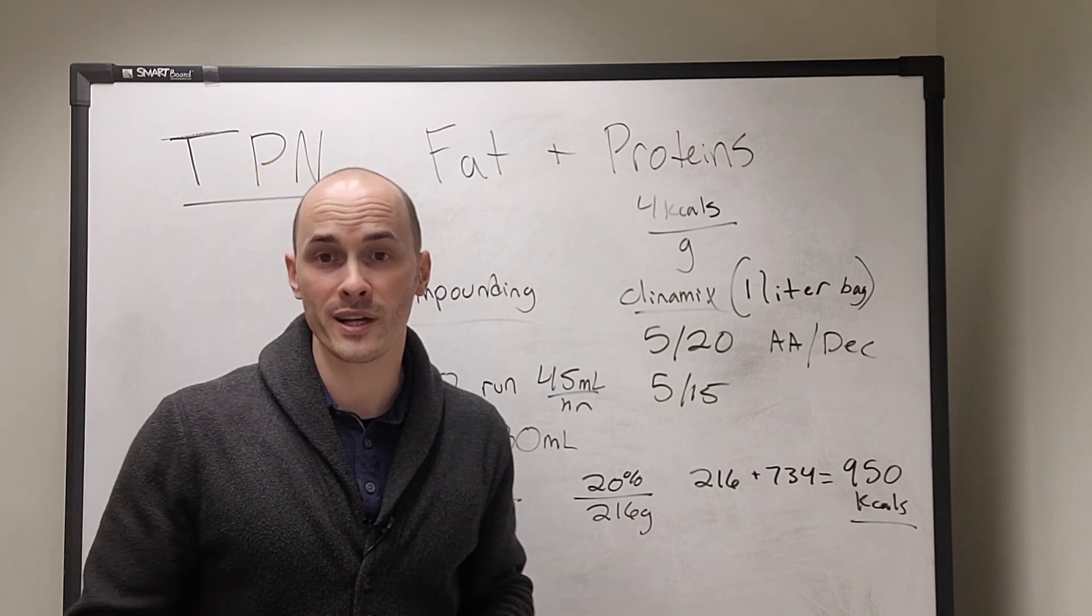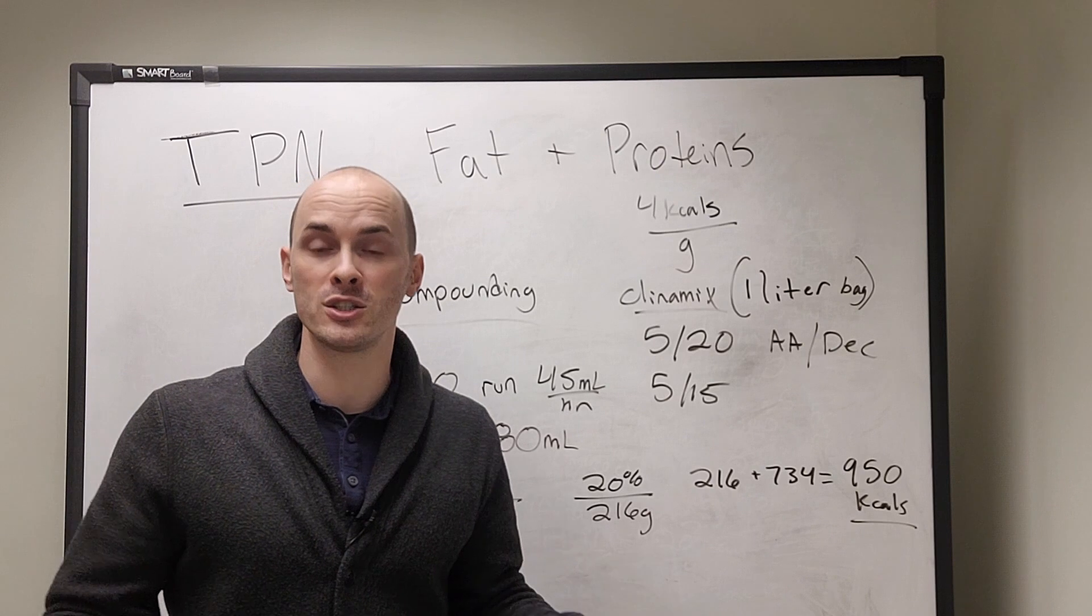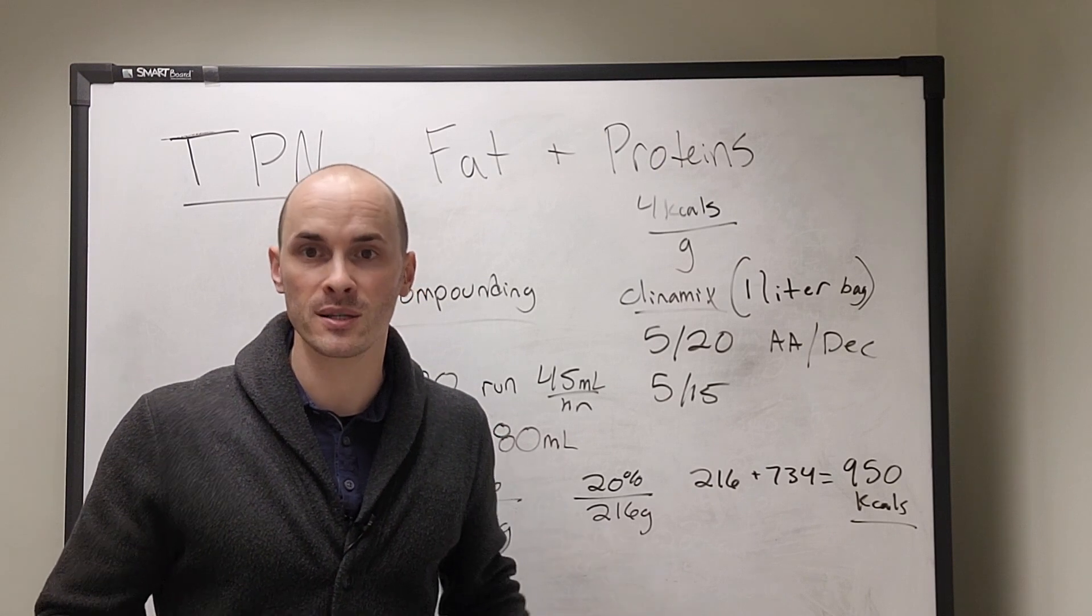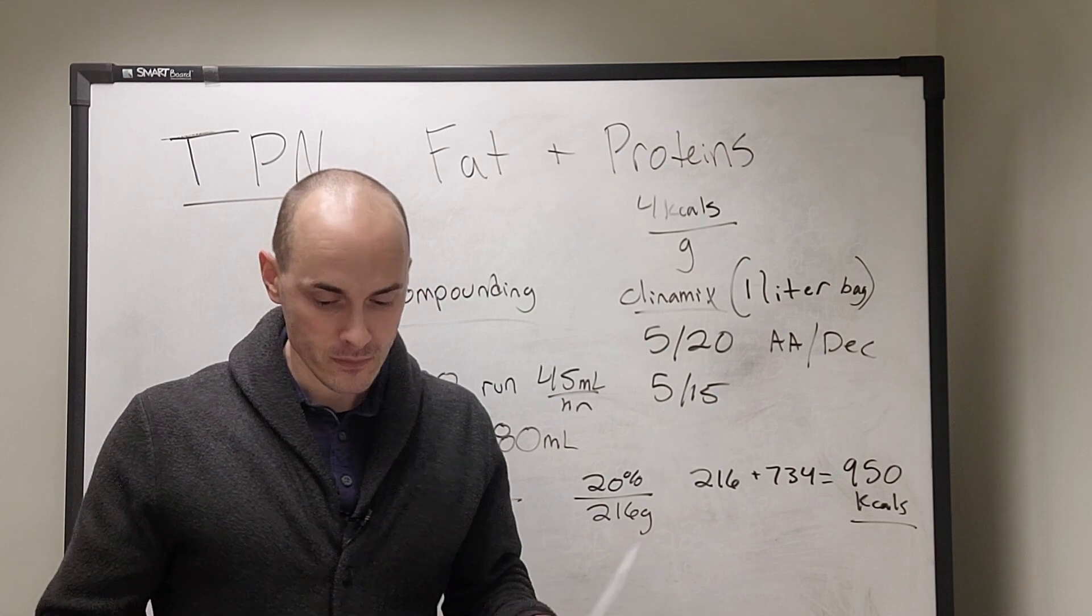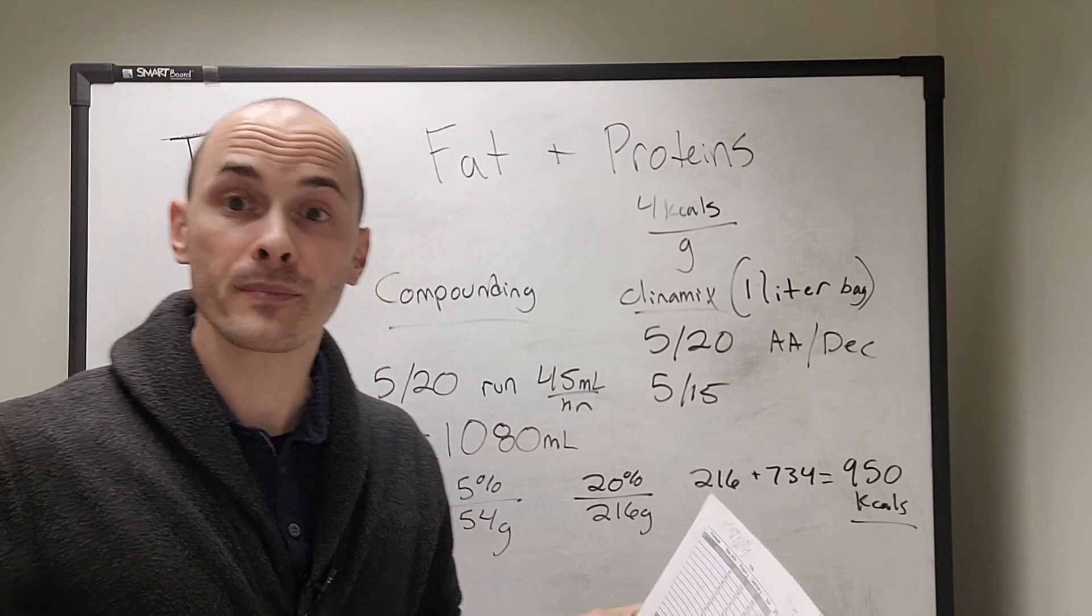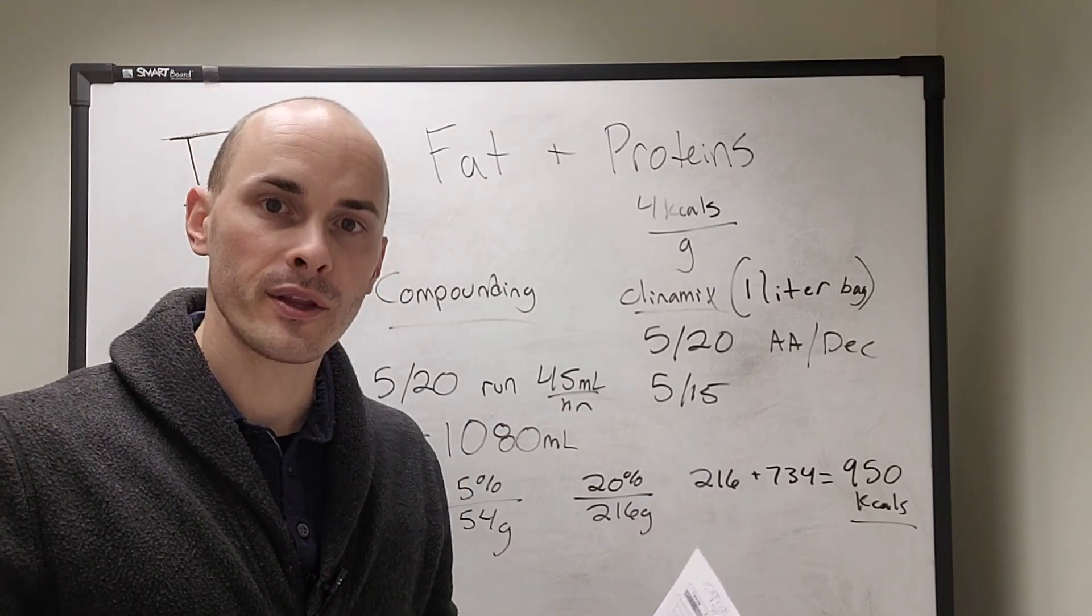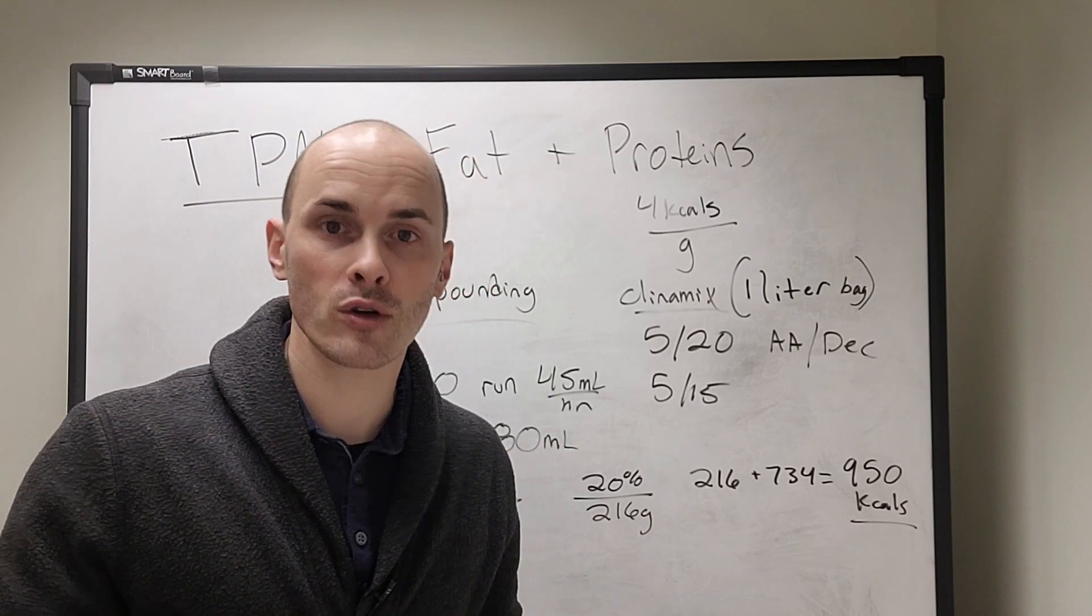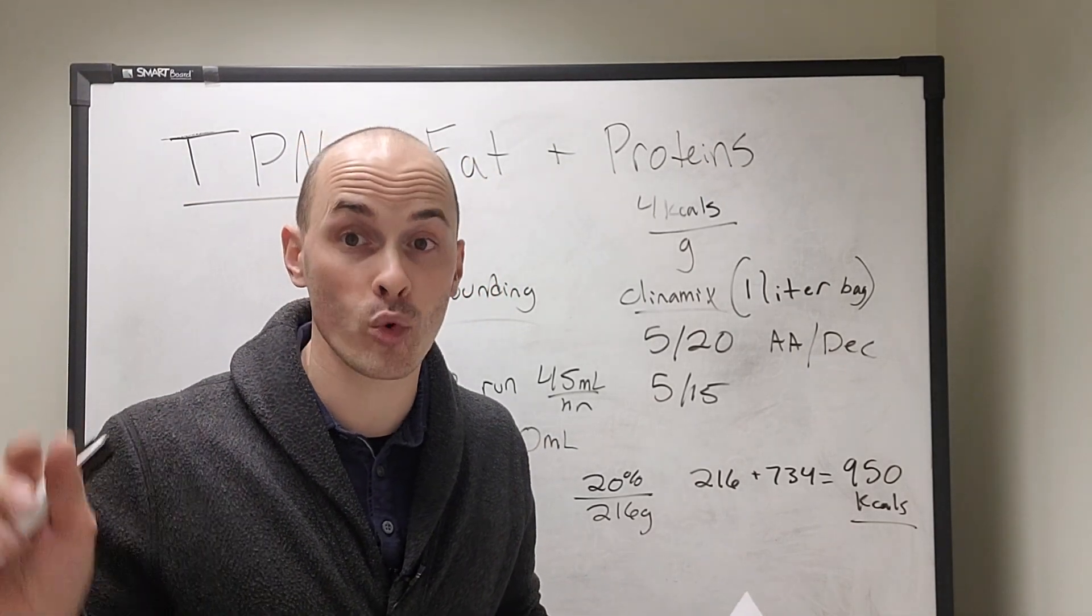So you might be saying, Sean, that's very confusing. There's too much math. Am I going to be expected to do this with all my TPN patients? And the answer is no. You have this awesome little chart, cheat sheet here, which lists out the solution, the rate, the amount of protein, dextrose, and calories at any given rate. And you actually work backwards.